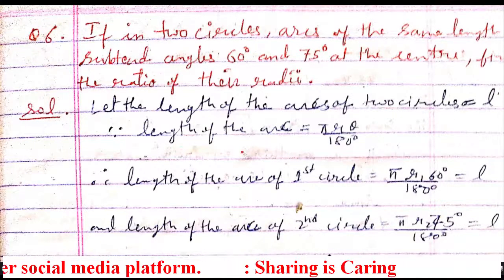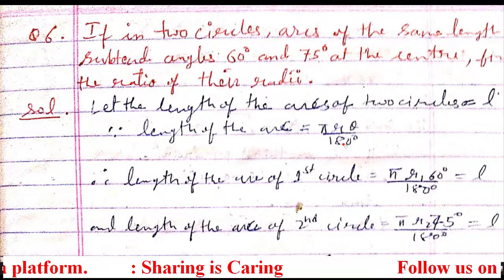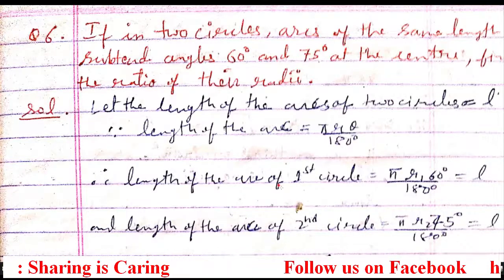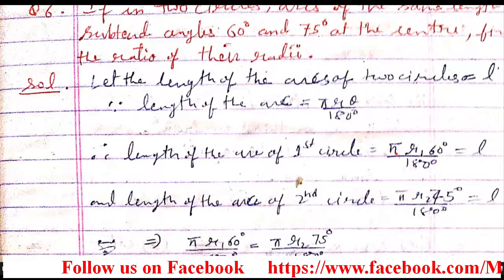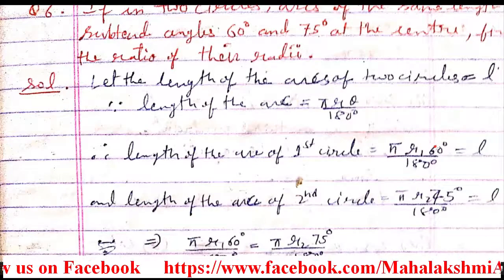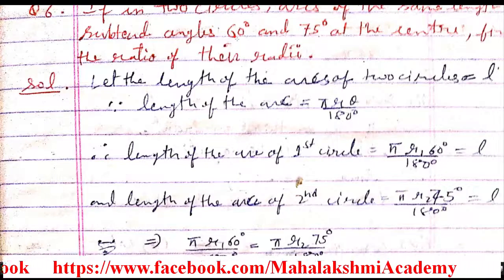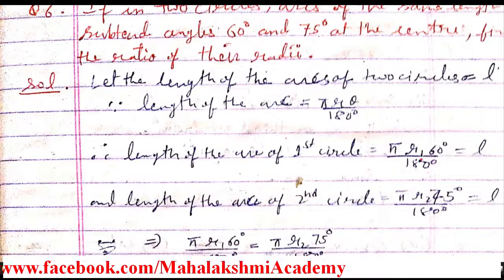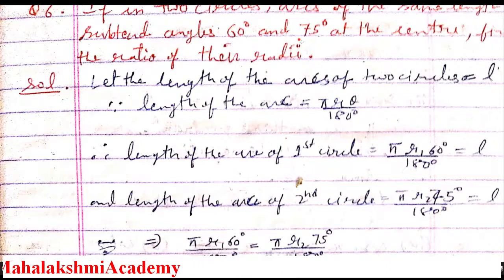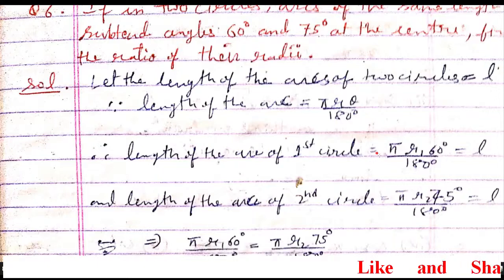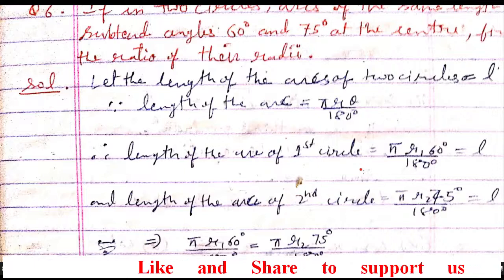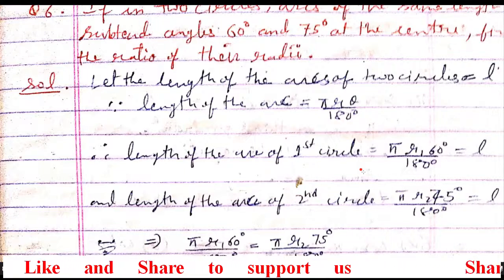Students, we know that length of arc formula is πrθ/180. So length of arc of the first circle is πr₁θ. What θ is available for the first circle? That is 60 degree. And for the second circle, the length of arc uses 75 degree. So here we have to find out the ratio between the radius of first circle and radius of the second circle.